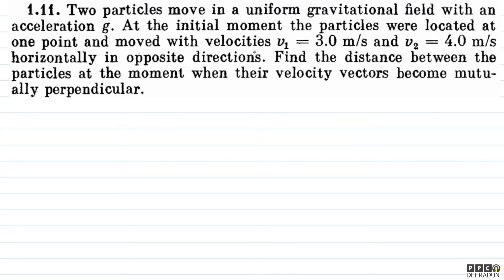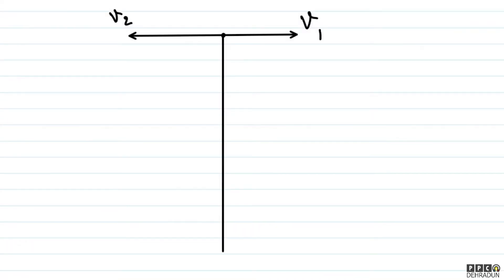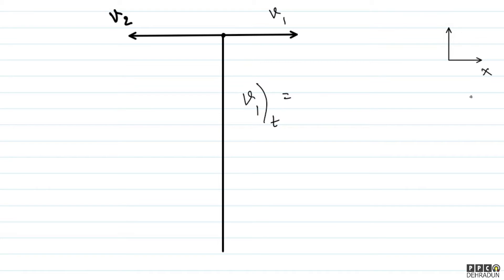So basically what is being said is that one particle is thrown with velocity v1 and another particle is thrown from the same place at the same moment with velocity v2, in the anti-parallel (opposite horizontal) direction. We need to find the separation between the two when the velocity vectors are perpendicular. Let's define our coordinate system: x-axis is the horizontal direction and y-axis is the vertical direction.